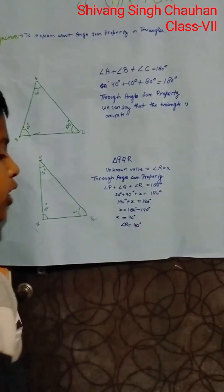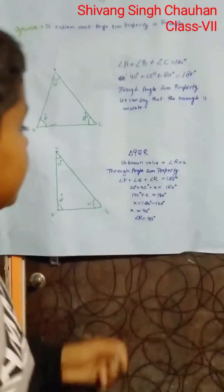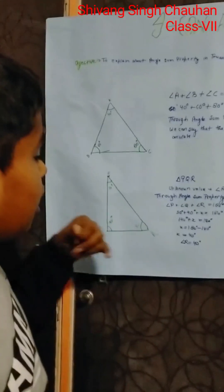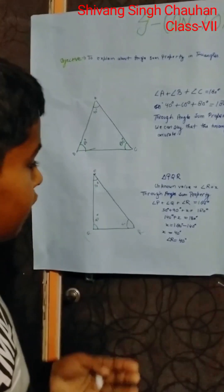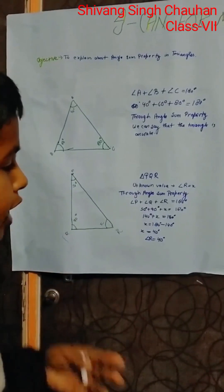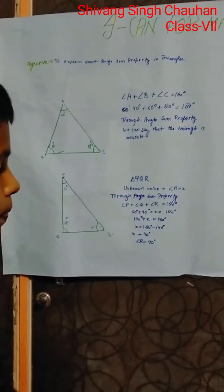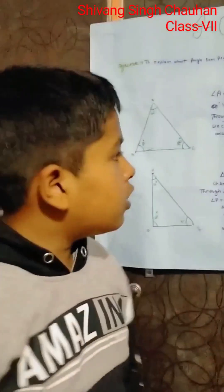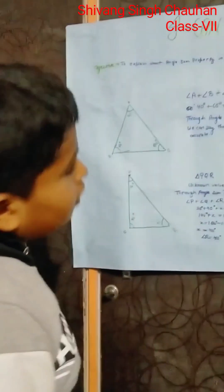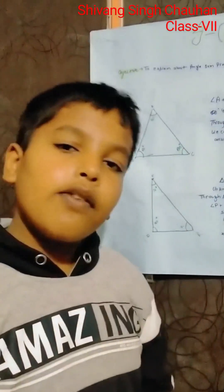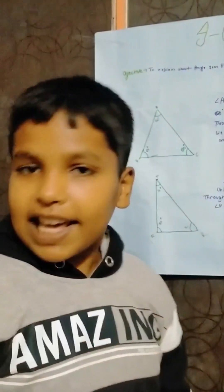So I hope you understand how to find the unknown angle in a triangle through the Angle Sum Property. I hope you liked this video. This is all for today — I hope we will meet next time. Goodbye, and thank you.